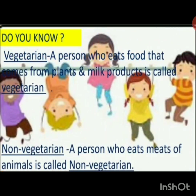A person who eats food that comes from plants and milk products is called a vegetarian. A person who eats meat of animals is called a non-vegetarian. Vegetarian: V-E-G-E-T-A-R-I-A-N. Non-vegetarian: N-O-N-V-E-G-E-T-A-R-I-A-N.